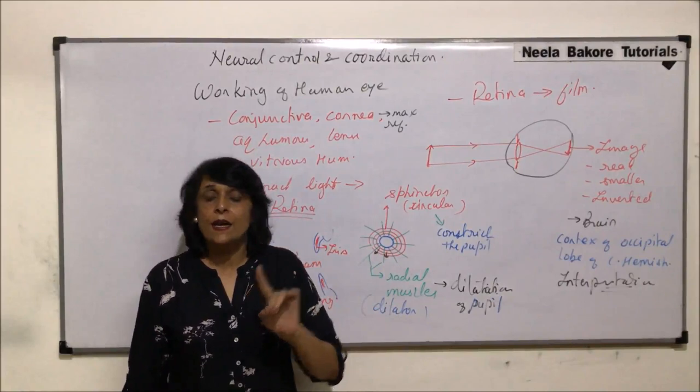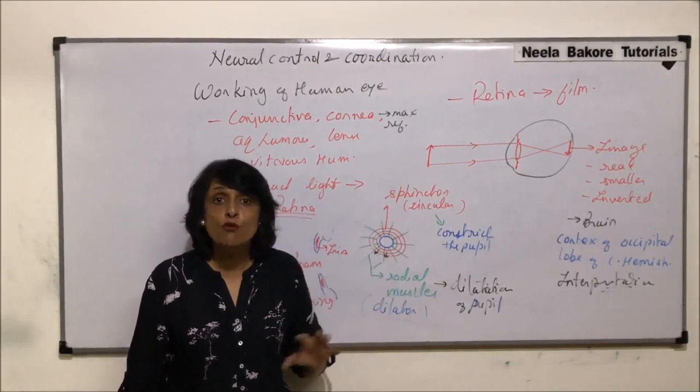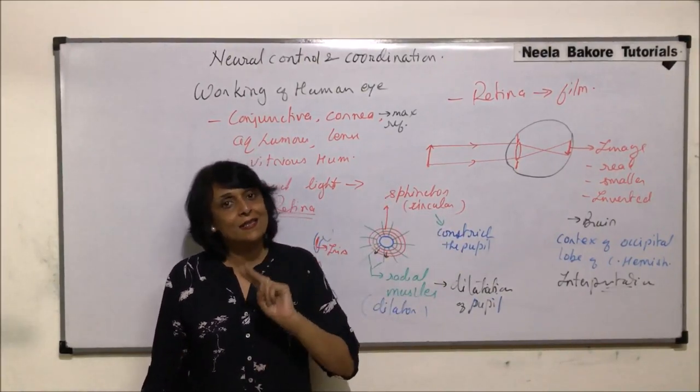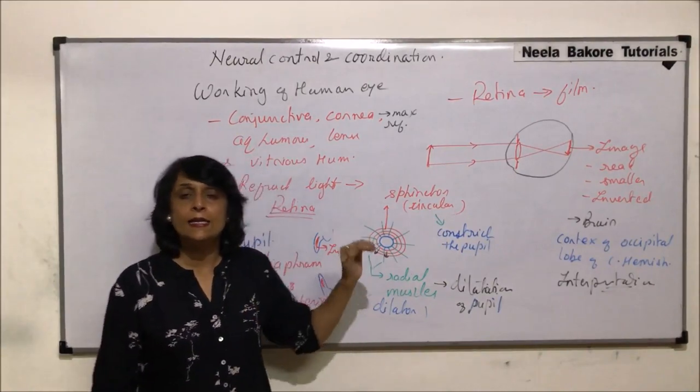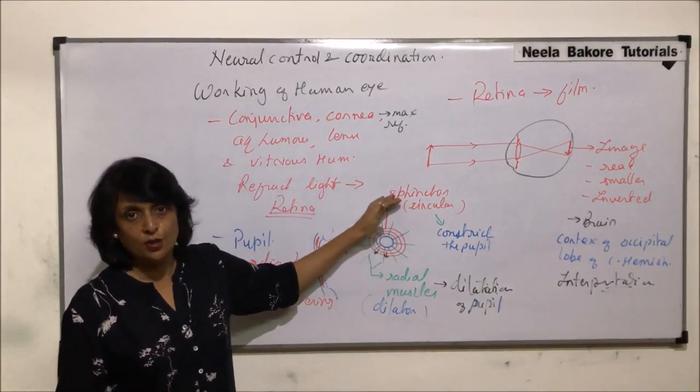Now there are two more things we need to understand when talking about the working of the eye: one is the various muscles which help in the movement of the eyeball, and the second is the power of accommodation.